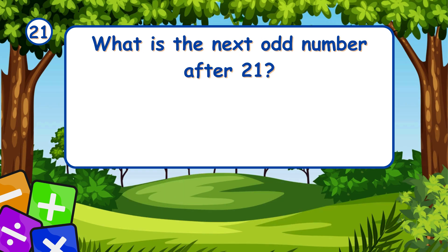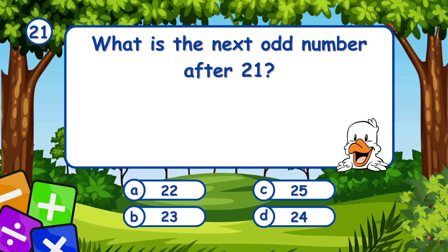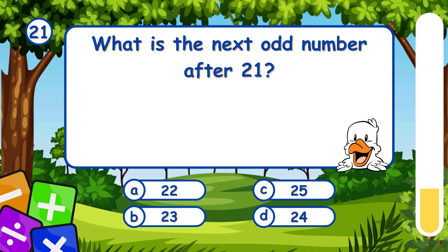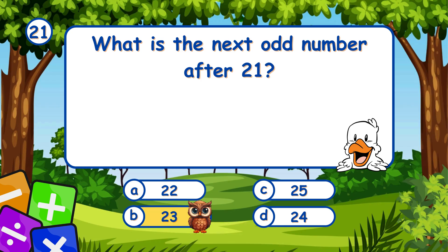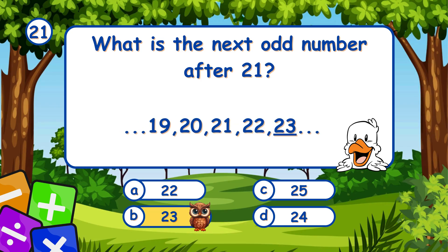What is the next odd number after 21? It's B, 23. The next odd number after 21 is 23.